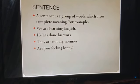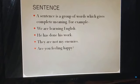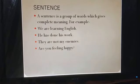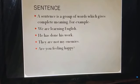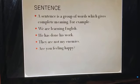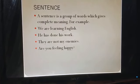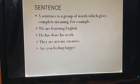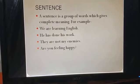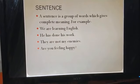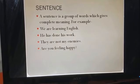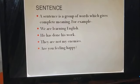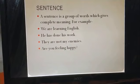इसमें अर्थ भी आना चाहिए और शब्दों का समूह वो होता ही है। जैसे आप example देखिए: 'We are learning English' — there are four words, and clearly hamein meaning समझ में आता है कि हम English सीख रहे हैं। दूसरा example: 'He has done his work.' तीसरा: 'They are not my enemies.' और चौथा: 'Are you feeling happy?' — इस तरह शब्दों का ऐसा समूह जो एक विशिष्ट और साफ-सुथरा अर्थ देता है, उसे हम sentence कहते हैं।